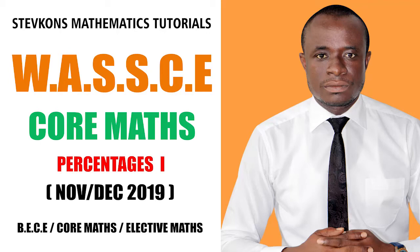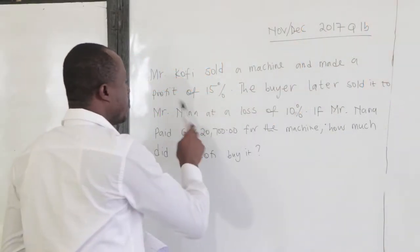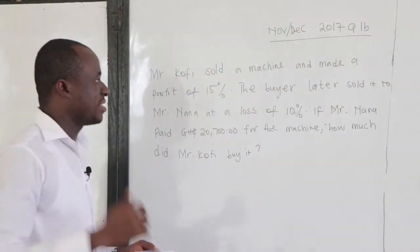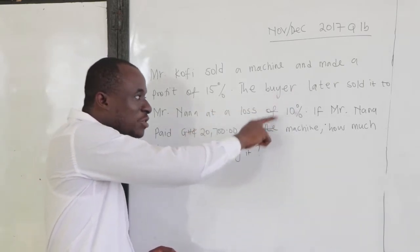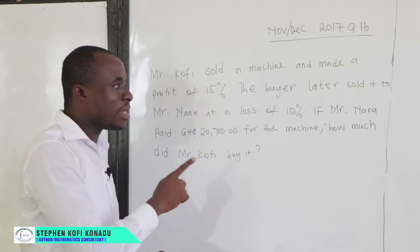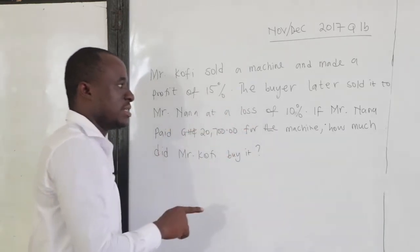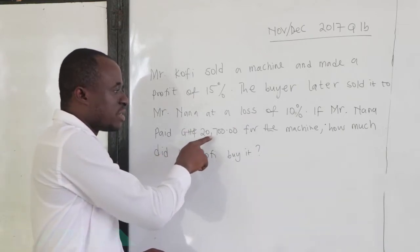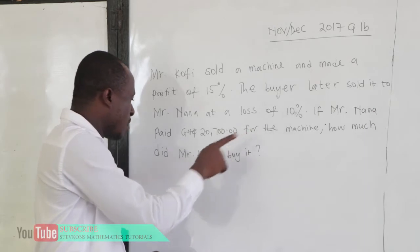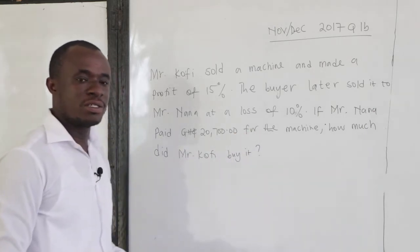Let's consider this question — BECE 2017, question number 1b. Mr. Coffee sold a machine and made a profit of 15%. The buyer later sold it to Mr. Nana at a loss of 10%. If Mr. Nana paid 20,700 cedis for the machine, how much did Mr. Coffee buy it? We want the cost price of Mr. Coffee.